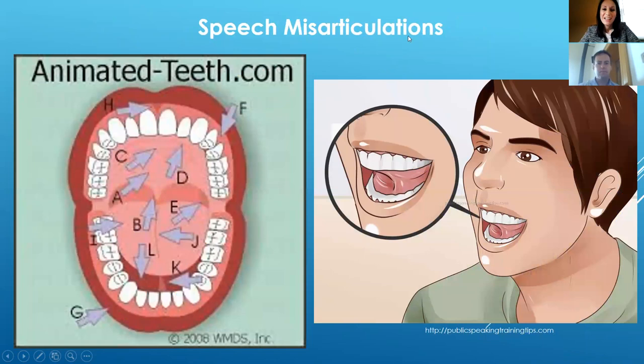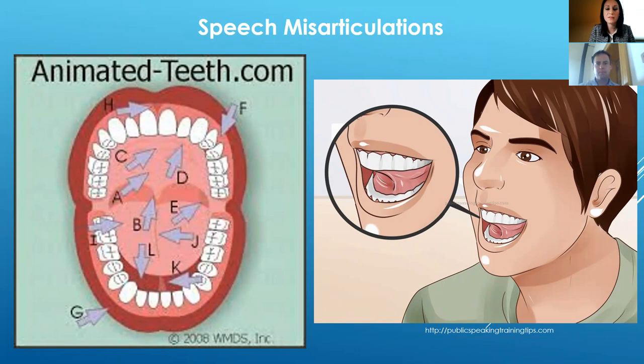We also see speech misarticulations. If the tongue is restricted and cannot be elevated to make specific sounds, speech is impaired. The tongue has to move to different parts of the mouth to make different sounds, and having the tongue reach the roof of the mouth when producing certain sounds is critical. A lot of these patients cannot elevate their tongue to make proper sounds, which decreases their self-esteem and creates emotional challenges as well.